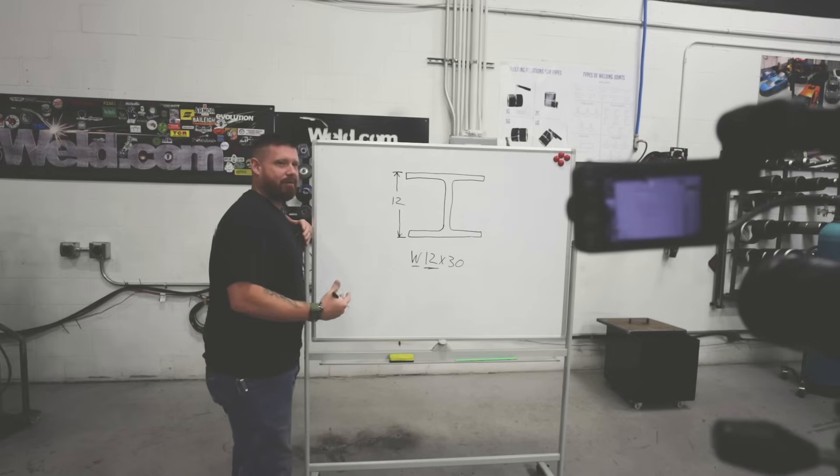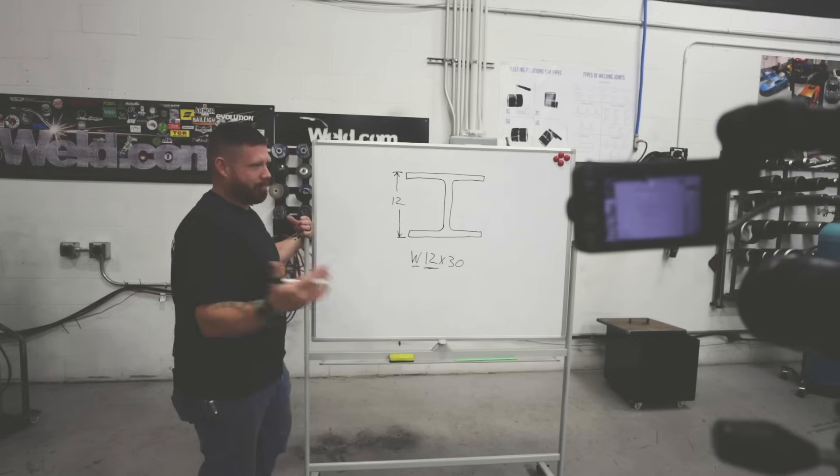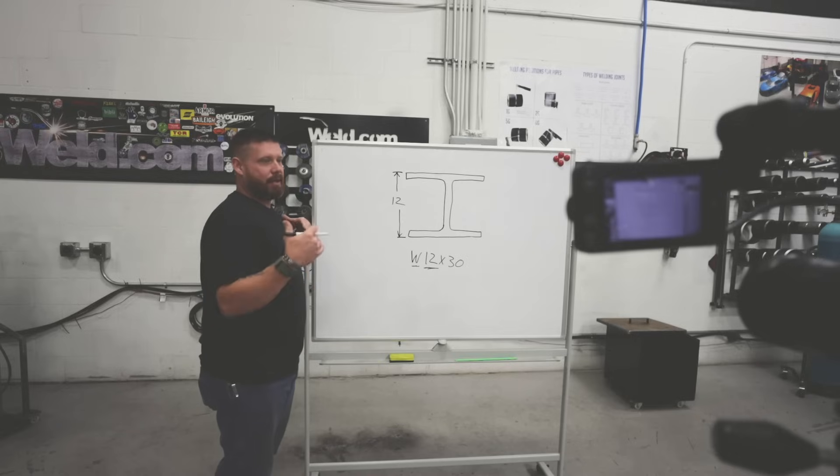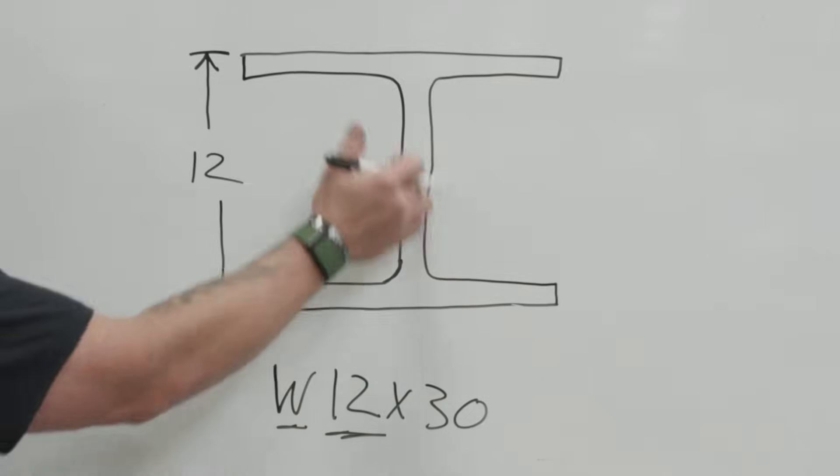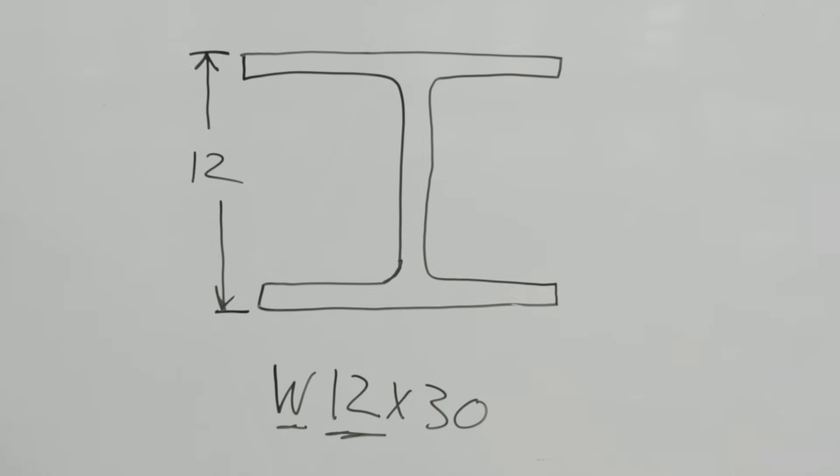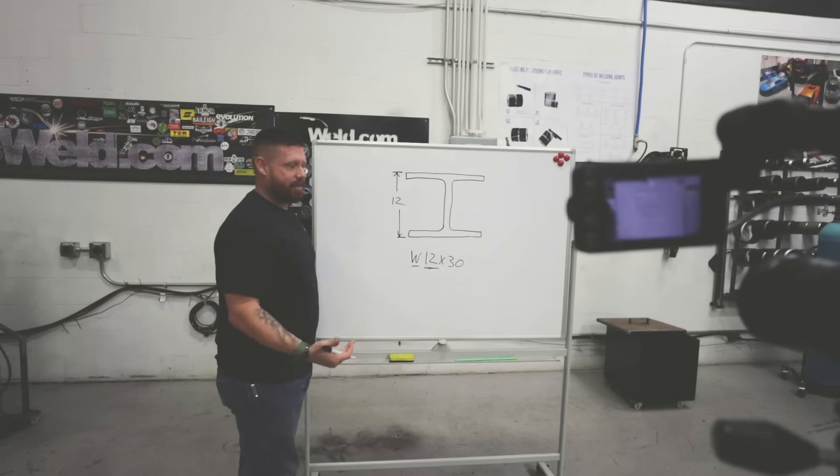So with most of your I-beams, this dimension is going to be rather close to 12. So when we say nominal, think of your average 2 by 4, right? When you go to the big box store and you buy a 2 by 4, unless you get rough cut lumber, it's not actually 2 by 4 inches. It's about an inch and 5/8 by 3 and 5/8. Same thing with your beams. It's going to be roughly 12 inches. So it might be like 11.95 inches or 12.05 inches. It's going to be really close to that 12 measurement.